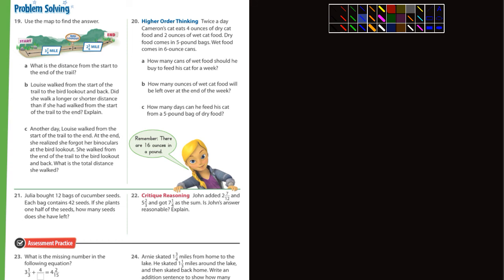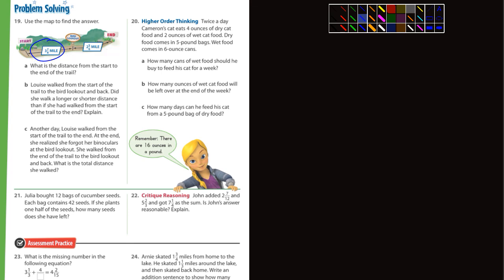Part B says Louise walked from the start of the trail to the bird lookout and then back. Did she walk a longer or shorter distance than if she had walked from the start of the trail to the end? Well, 3 and 7/8 is larger than 2 and 5/6, so doing that twice is going to be more than the total trail length.